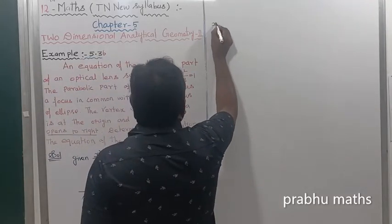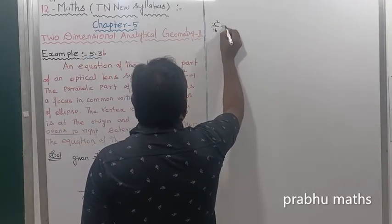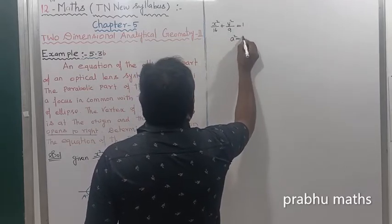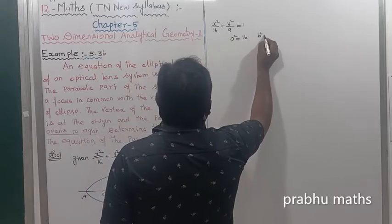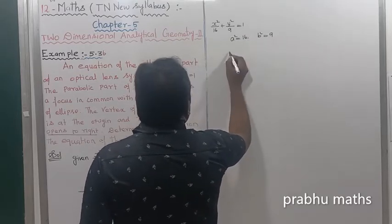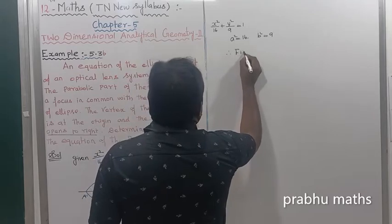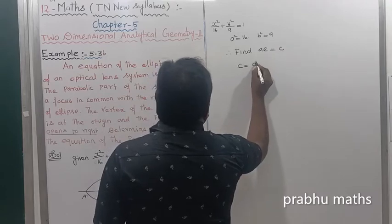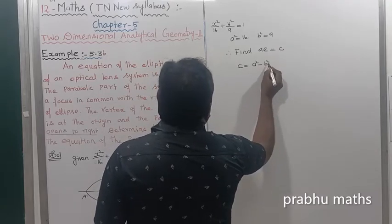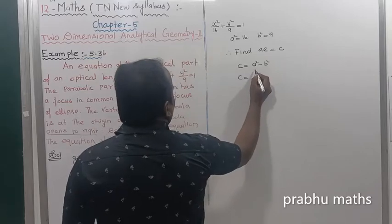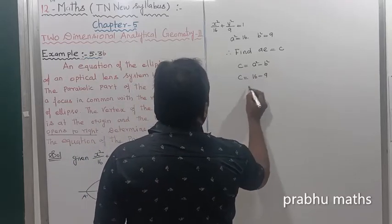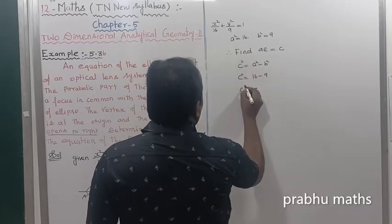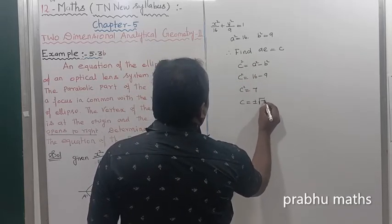From the equation x² divided by 16 plus y² divided by 9 equals 1, we get a² = 16 and b² = 9. To find AE, we use c² = a² − b² = 16 − 9 = 7. Therefore c² = 7, and c = ±√7.